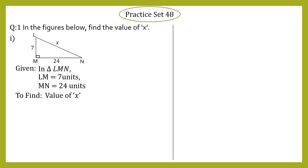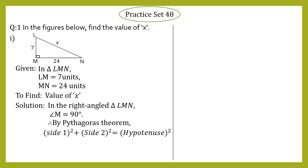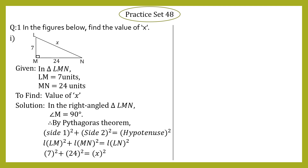LN is taken as x, so we have to find the length of LN. Solution: In right-angle triangle LMN, angle M = 90 degrees. Since one angle is 90 degrees, we can apply Pythagoras theorem. Therefore, by Pythagoras theorem: side₁² + side₂² = hypotenuse². LM is side 1, MN is side 2 — these are the perpendicular sides — and LN is the hypotenuse. So: LM² + MN² = LN², giving us 7² + 24² = x².